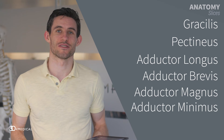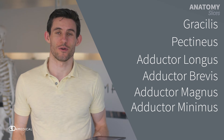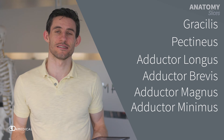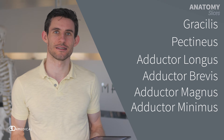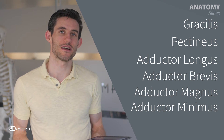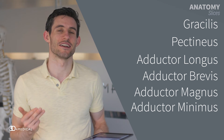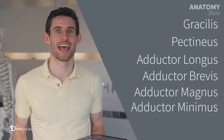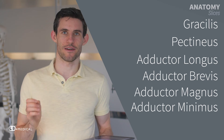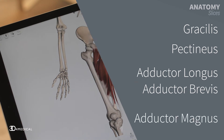Overall there are six muscles in this group: the gracilis, the pectineus, adductor longus, adductor brevis, adductor magnus, and finally the adductor minimus.